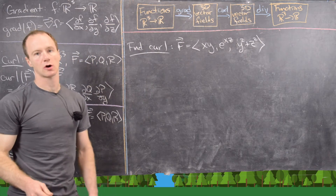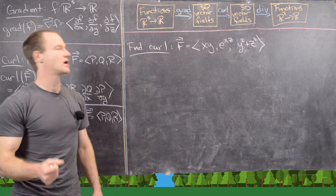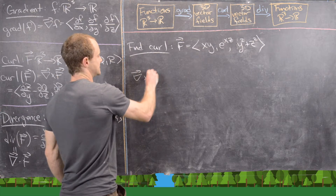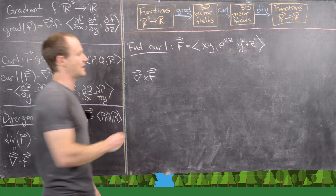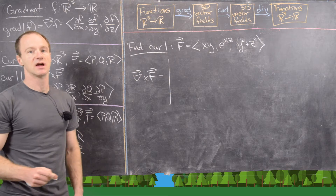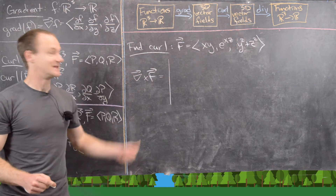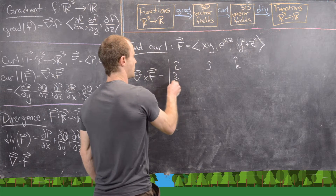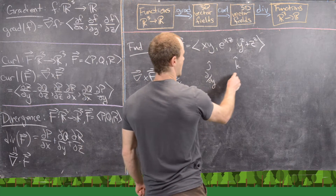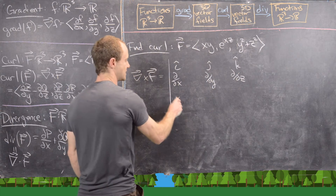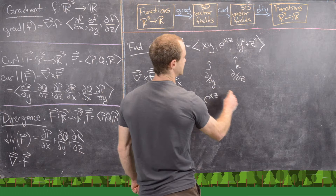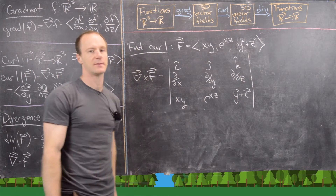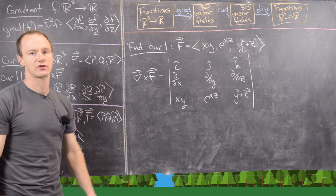Now let's calculate the curl of this vector field, whose components are P = xy, Q = e^{xz}, and R = y² + z². We'll use del cross F and compute it via the cross product of the differential operator del with F. We set up the matrix with i, j, k in the first row; partial with respect to x, y, z in the second row; and P, Q, R — that is, xy, e^{xz}, y² + z² — in the third row.